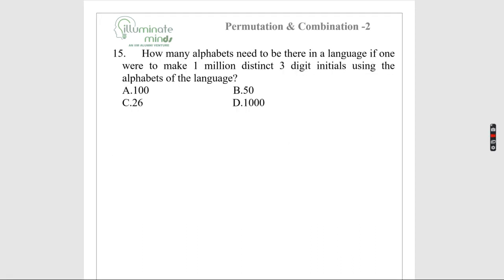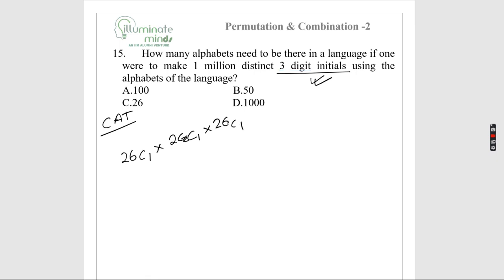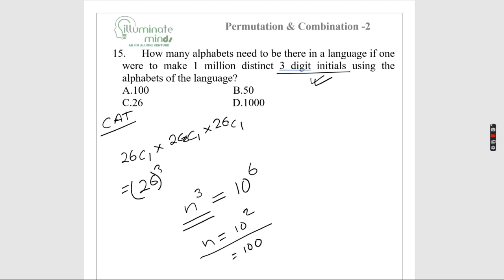How many alphabets are needed in a language to make one million distinct 3-letter initials? If there are n characters, the number of 3-letter initials is n³. Setting n³ = 10⁶ gives n = 100. So the language needs 100 characters. The answer is option A.